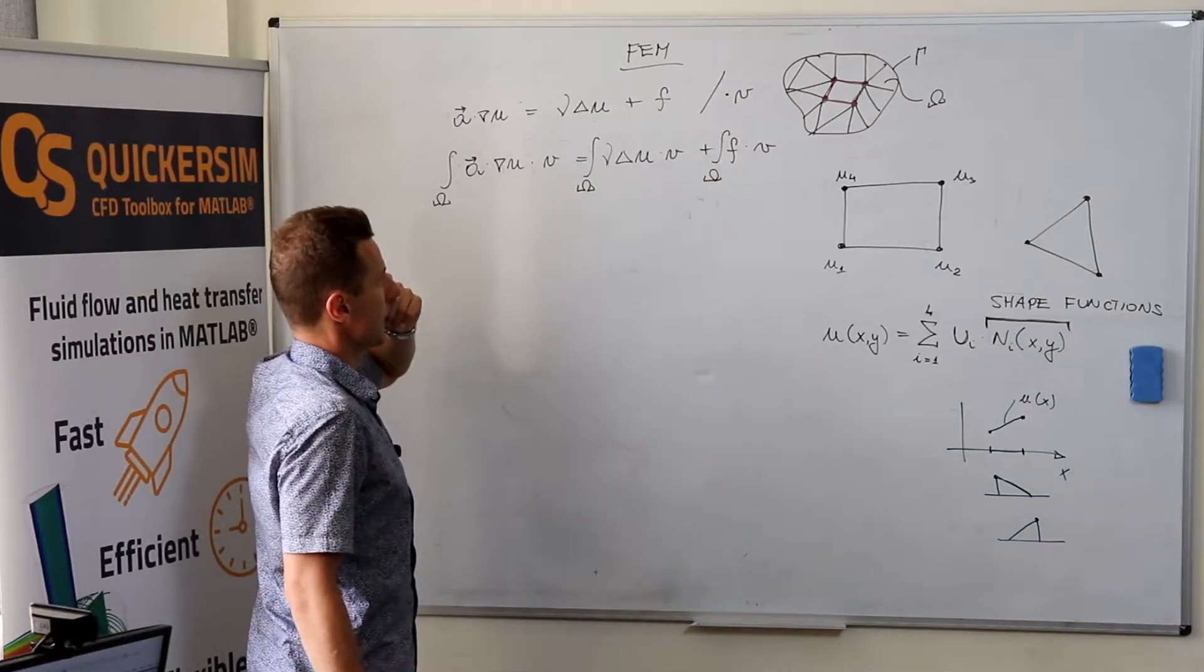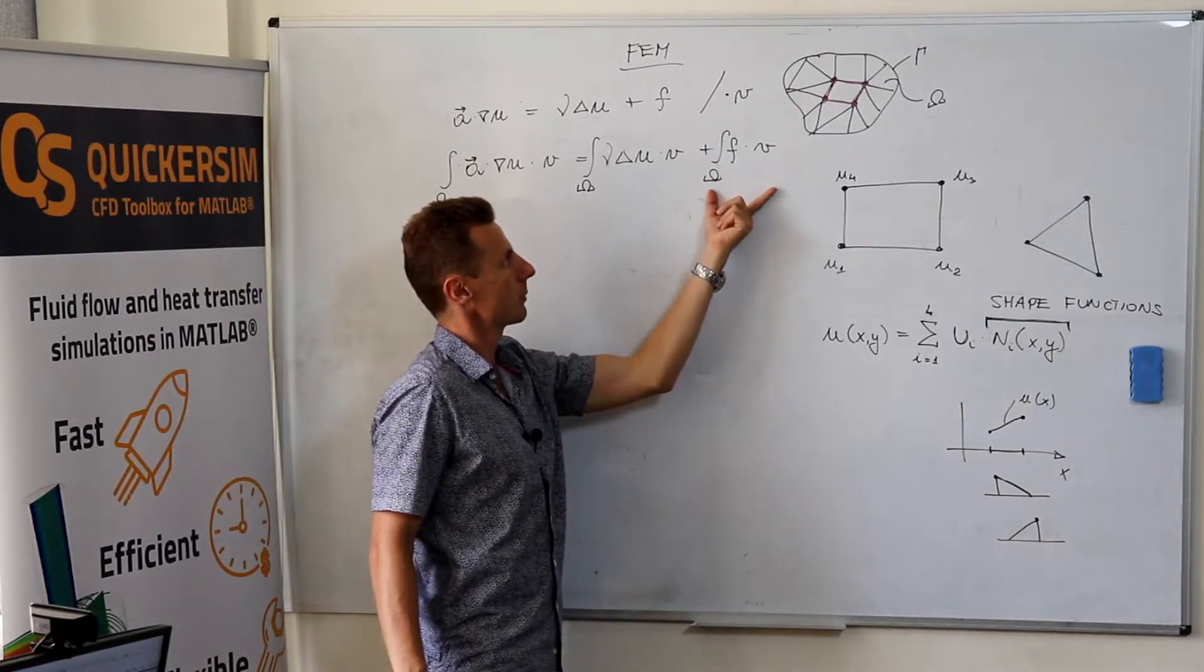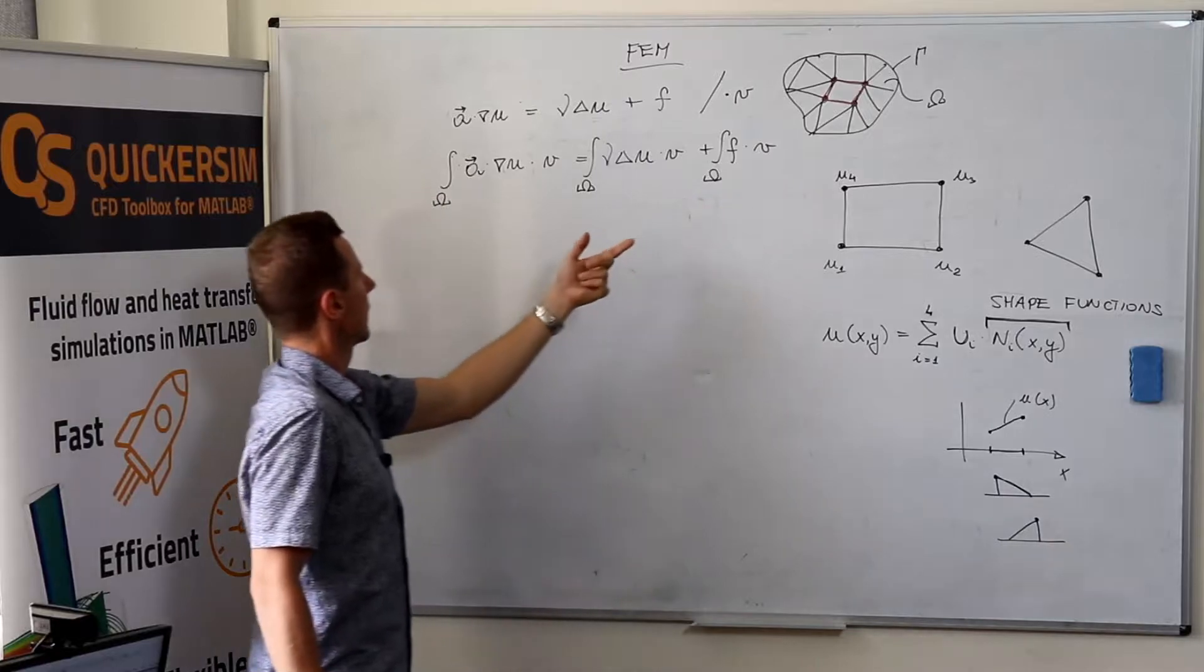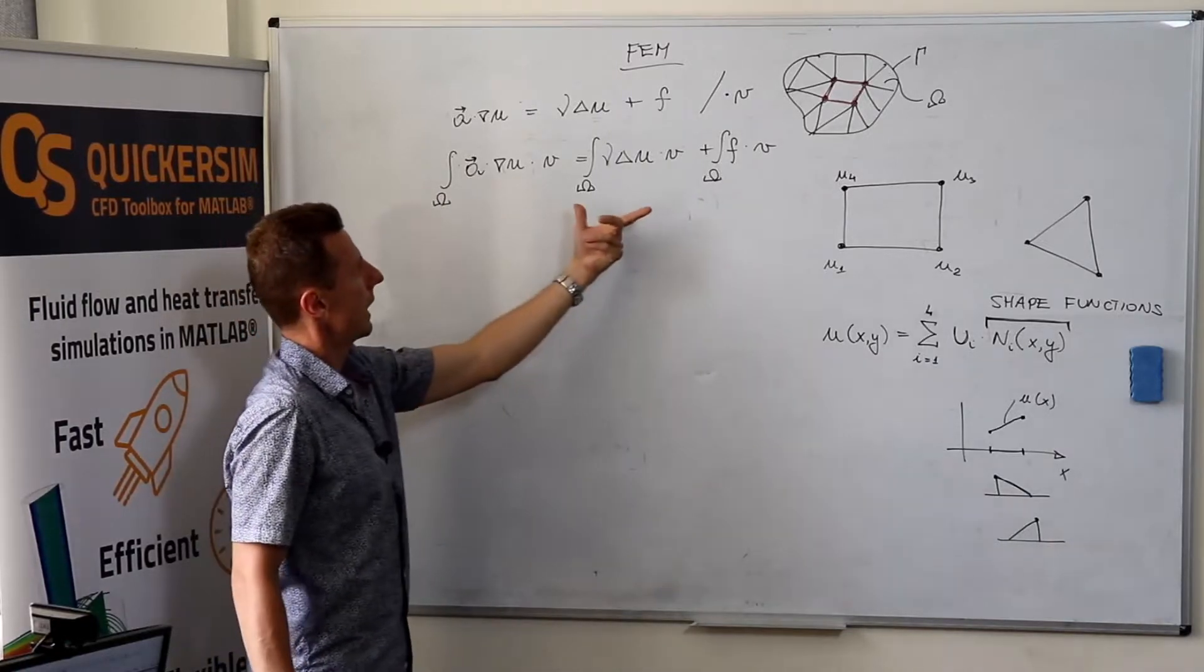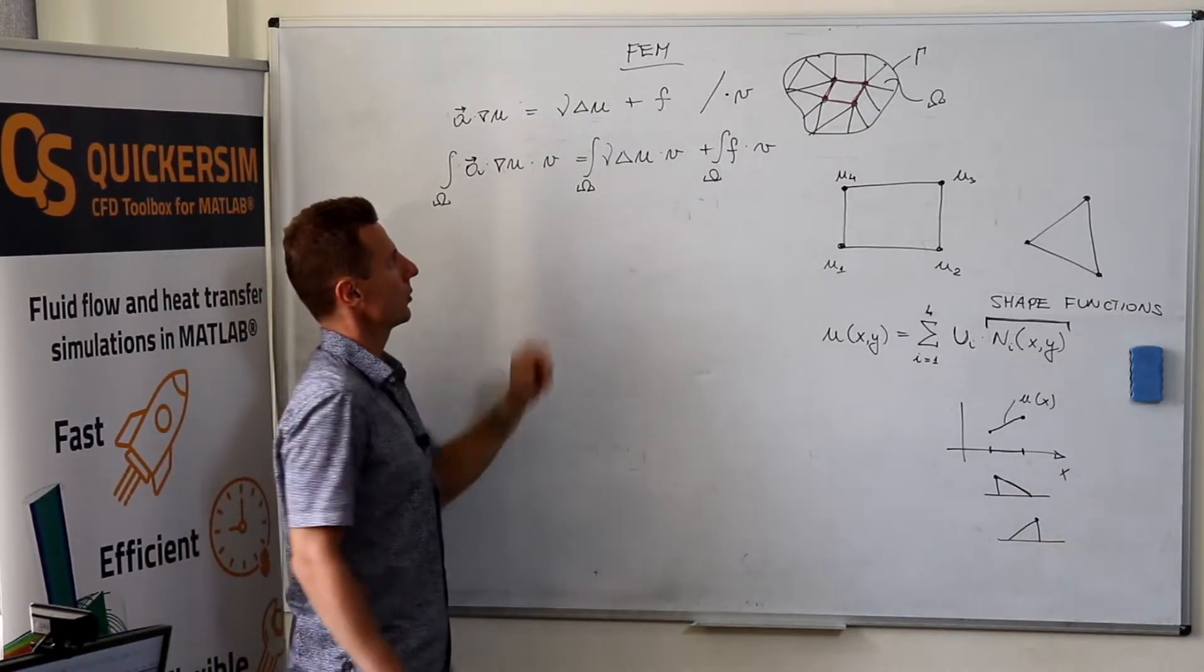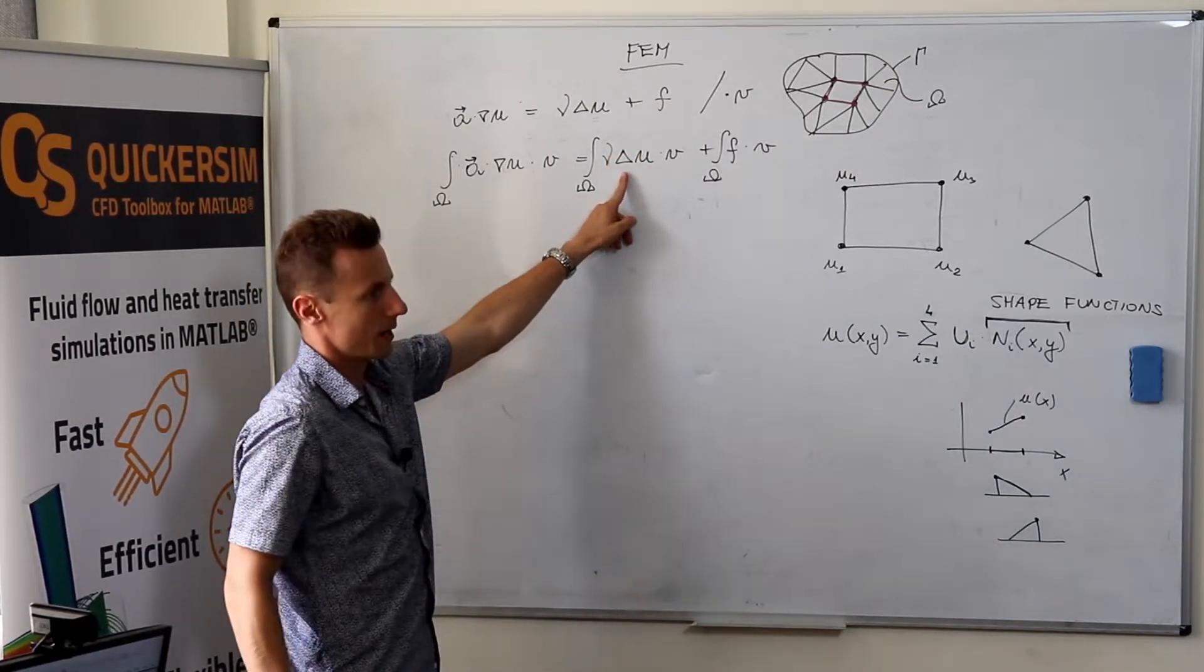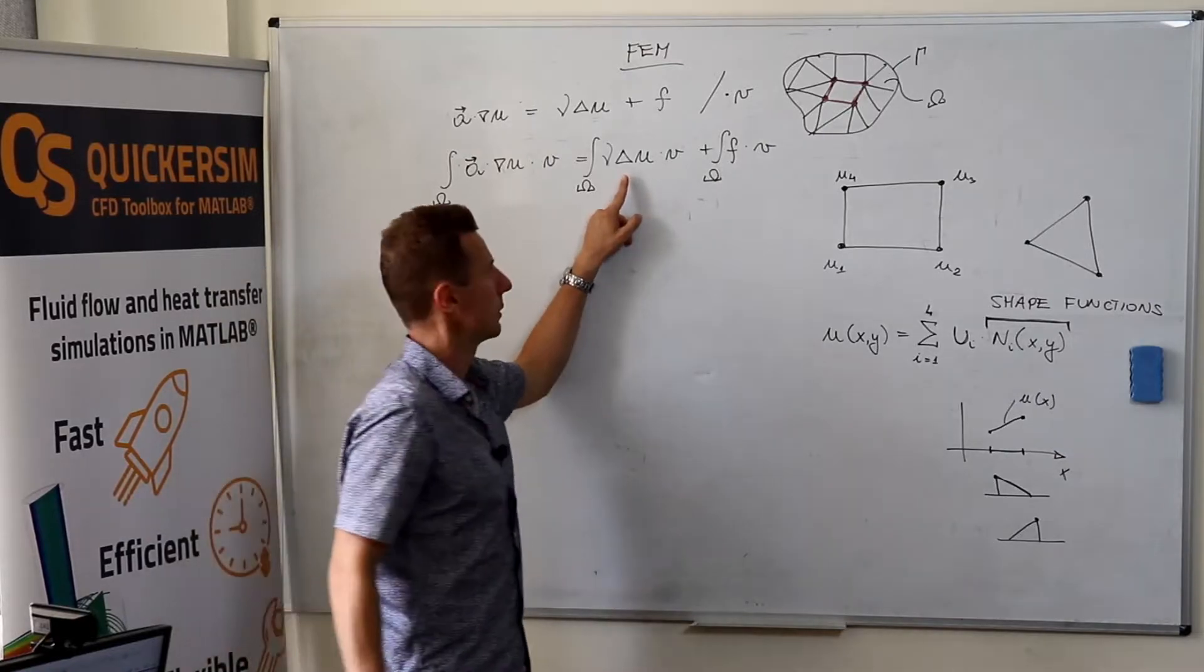Right now we need to make some adjustments. This term can be pretty nicely computed. This one also, however, we want to get rid of these second order derivatives. I will explain in a minute why.